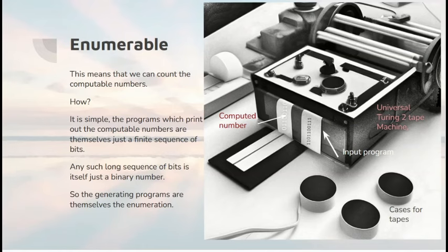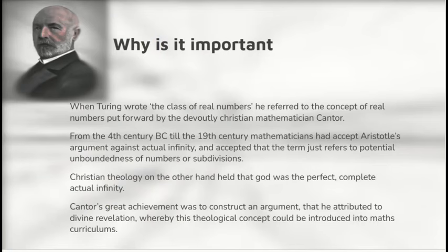The programs which print out the computable numbers are themselves just a finite sequence of bits. And any long sequence of bits is itself just a binary number. So here we have a universal Turing 2-tape machine with an input tape and an output tape. The input program goes in with a series of zeros and ones. That can be treated as a number. And the computed number gets printed out there. So the generating programs are themselves the enumeration of the computable numbers.